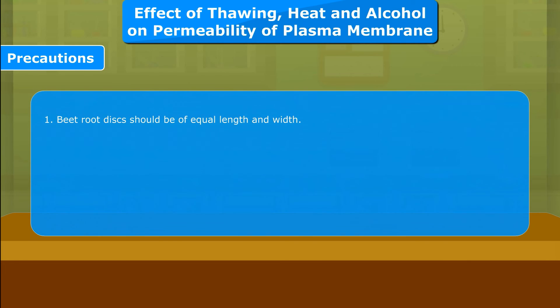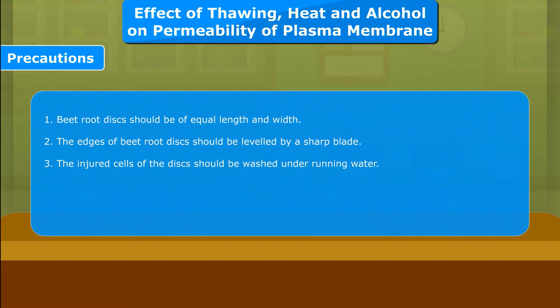Precautions: 1. Beetroot discs should be of equal length and width. 2. The edges of beetroot discs should be leveled by a sharp blade. 3. The injured cells of the discs should be washed under running water.